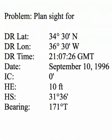So let's get started. Today we're going to focus on a specific problem from the StarPilot manual. This particular problem is in the section on Star/Planet ID. The specific problem is to ID a body found at altitude 31 degrees 36 minutes with a bearing of 171, at the given DR position at that given date and time GMT. We'll also use the same data to view some of the other site planning features. You might want to record this information or print out this page so that you have this particular problem available as we work through the different problem sets.